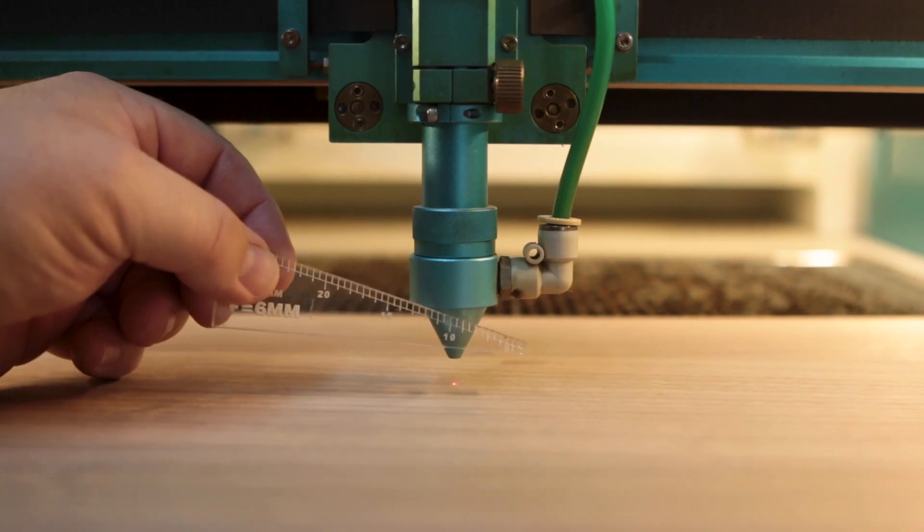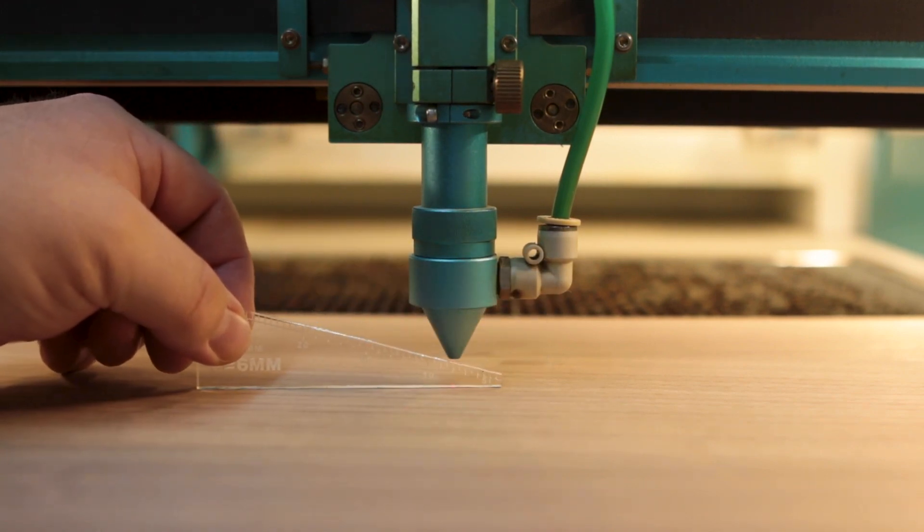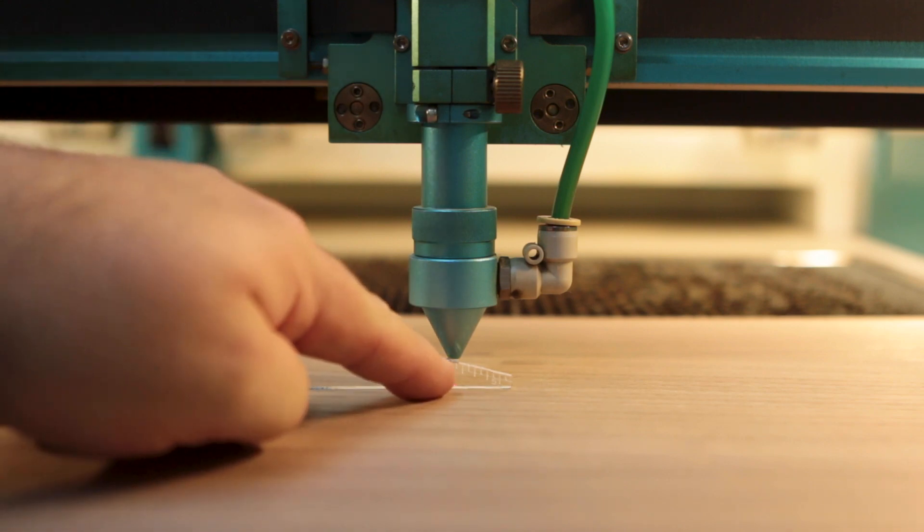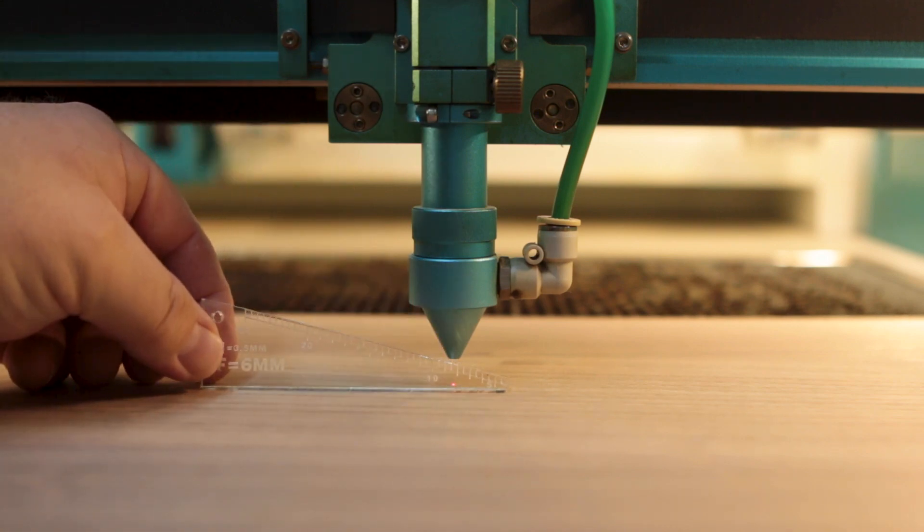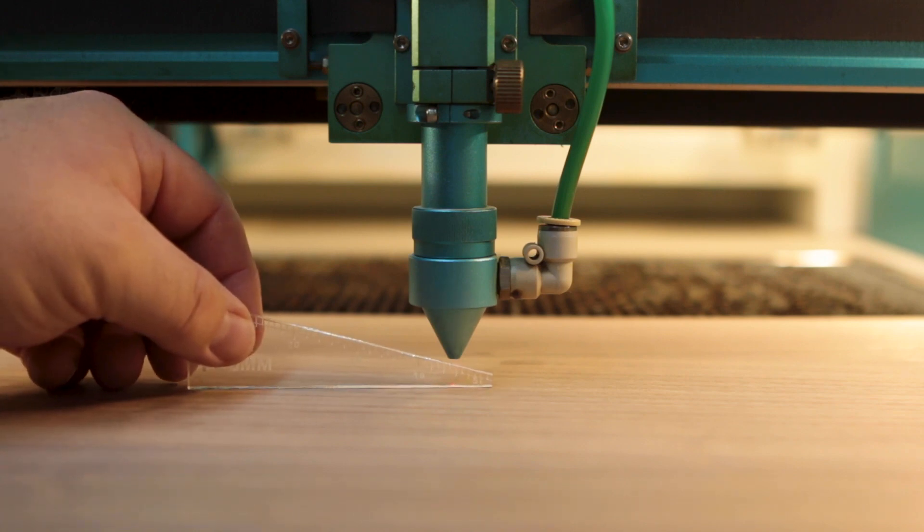The other method uses this little focus ruler that also came with your machine. You can see if you slide it underneath here, you can see kind of which mark you're on. Each one of these little marks is a half of a millimeter. So you can just raise or lower your bed till you get it to the exact height that you want it to be.